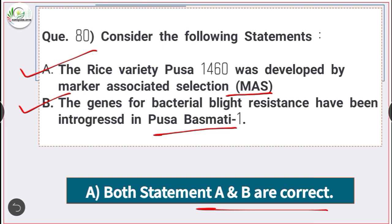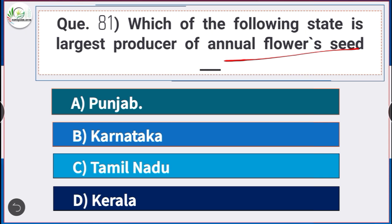Question number 81: Which of the following states is the largest producer of annual flower seed? Answer is option A — Punjab. Punjab is the largest producer of annual flower seed.